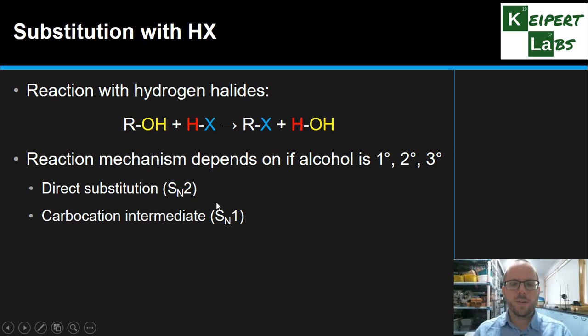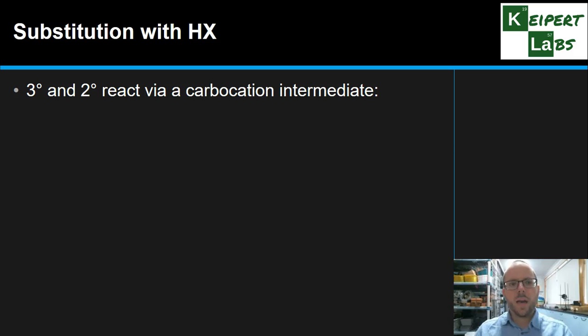We're not going to go into specifically what that refers to so much. It's just a chemist's shorthand for these substitution reactions. So, the 1 and the 2 relates to the rates of reaction. Again, we're not going to go into that. But so, we need an acid catalyst in both situations. So, first, we're going to have a look at the carbocation intermediate step, which happens more with tertiary and secondary alcohols.